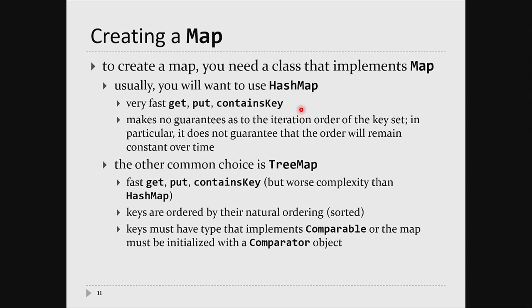One disadvantage of HashMap is that you don't know the iteration order. If you iterate over the keys of the map, there's no fixed iteration order — it's not alphabetic, not exactly random, but looks random. Furthermore, if you put stuff in the map or take things out, the iteration order can change. Your other common choice is a TreeMap, which you use when you want to sort your keys. It's similar to a TreeSet — get, contains, and add are O(log N).